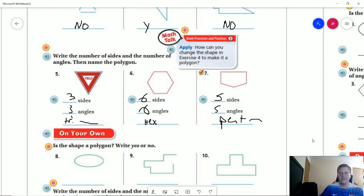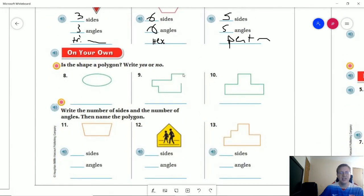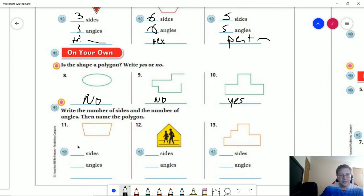And again I'm abbreviating for sake of time. Is the shape a polygon? No for number eight because while we have a closed shape it is not made up of line segments. Number nine, we have a shape made up of line segments but it is not a closed shape so again we have no. And number ten would be yes, we have a closed shape made up of only line segments.